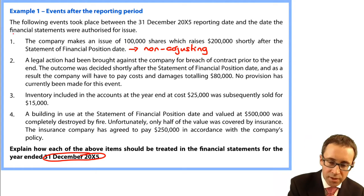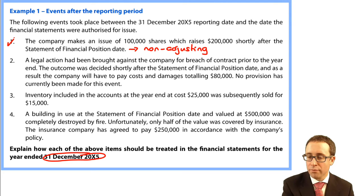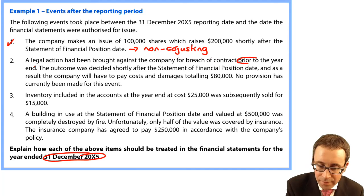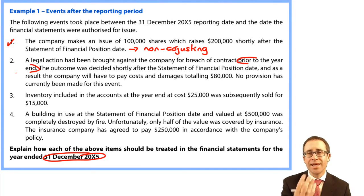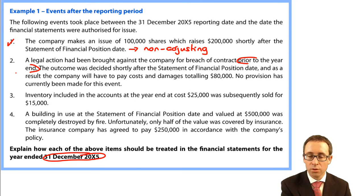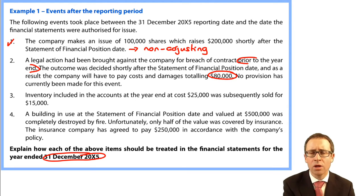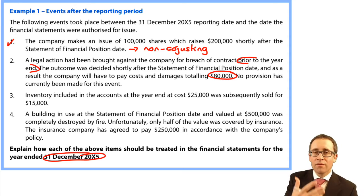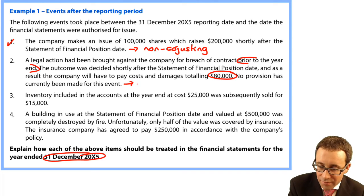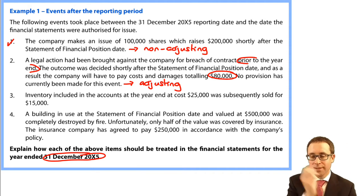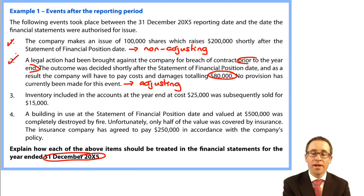Item two: legal action was brought against the company for breach of contract prior to the year end, so the legal action is in place at the reporting date. The outcome was decided shortly after the statement of financial position date, and as a result the company will have to pay costs and damages totalling $80,000. This gives us evidence of a condition — the court case — that existed at the reporting date. So that will be an adjusting event, and we would need to go through and make a provision, accruing for that $80,000.